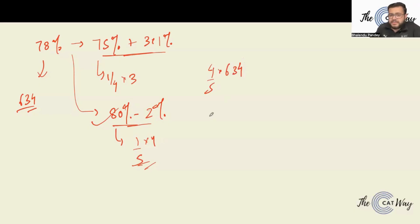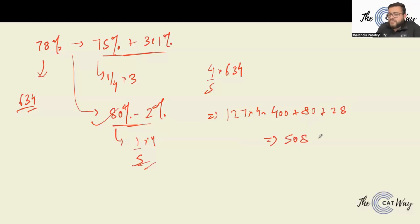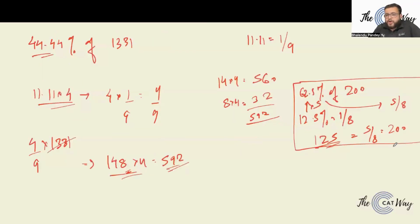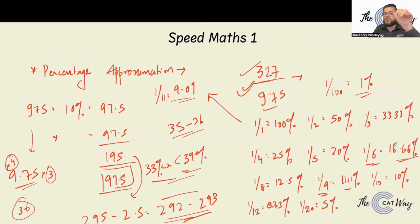4/5 × 634: 634 divided by 5 goes once, remainder 13, then 34 goes roughly 6-7 times — approximately 127. Then 127 × 4: 100 × 4 = 400, 20 × 4 = 80, 7 × 4 = 28, total = 508. Now subtract 2%: 1% of 634 is 6.34, so 2% ≈ 12.68, roughly 13. Final answer: 508 − 13 = approximately 495.